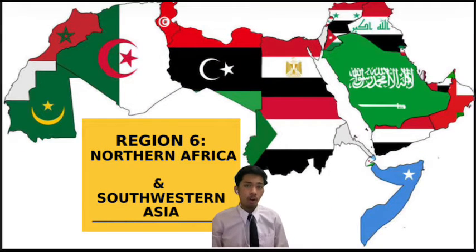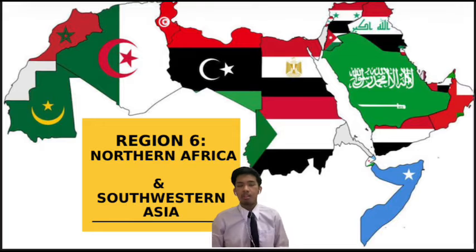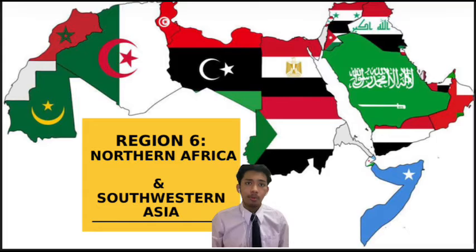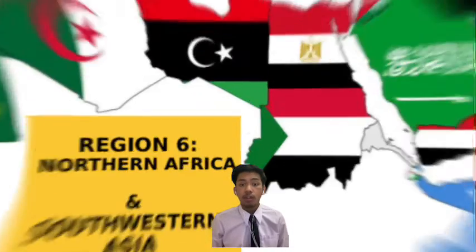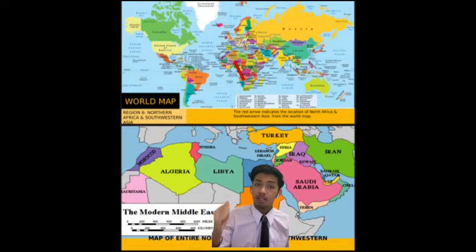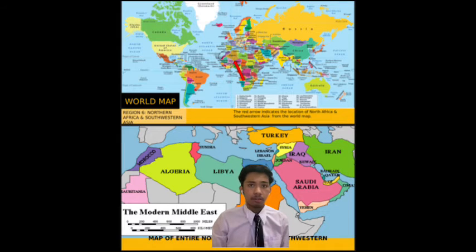Assalamualaikum, and I hope you're all in good health. My name is Muhammad Amir Hakimi bin Musa from Group 7. The region that we chose is Northern Africa and Southwestern Asia. As you can see here, it's a world map of the region.